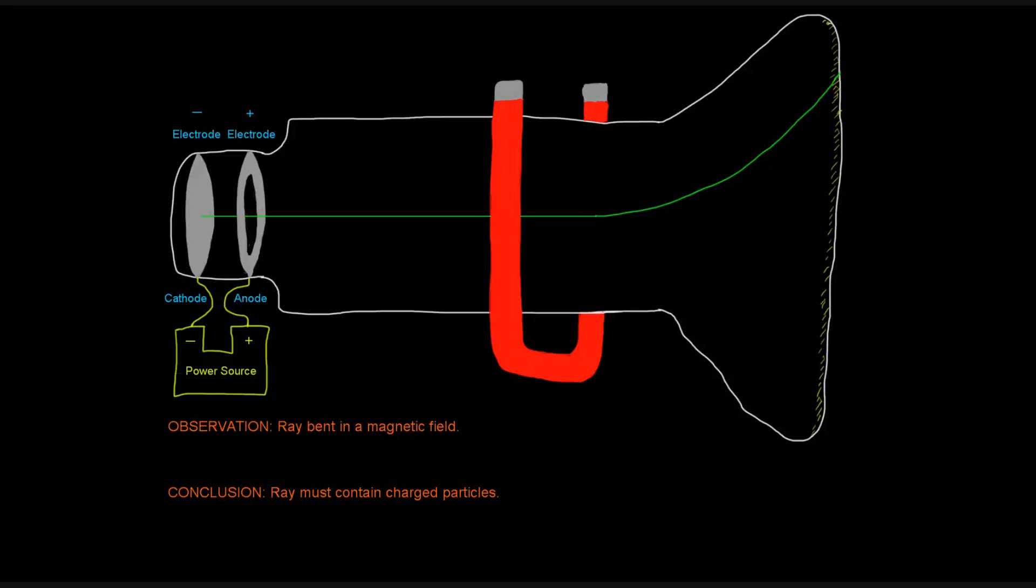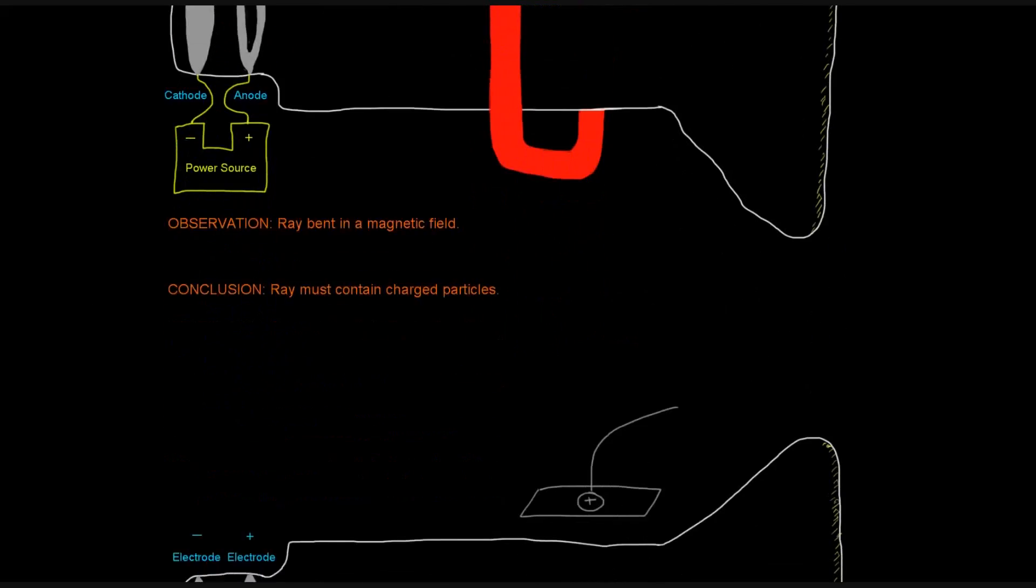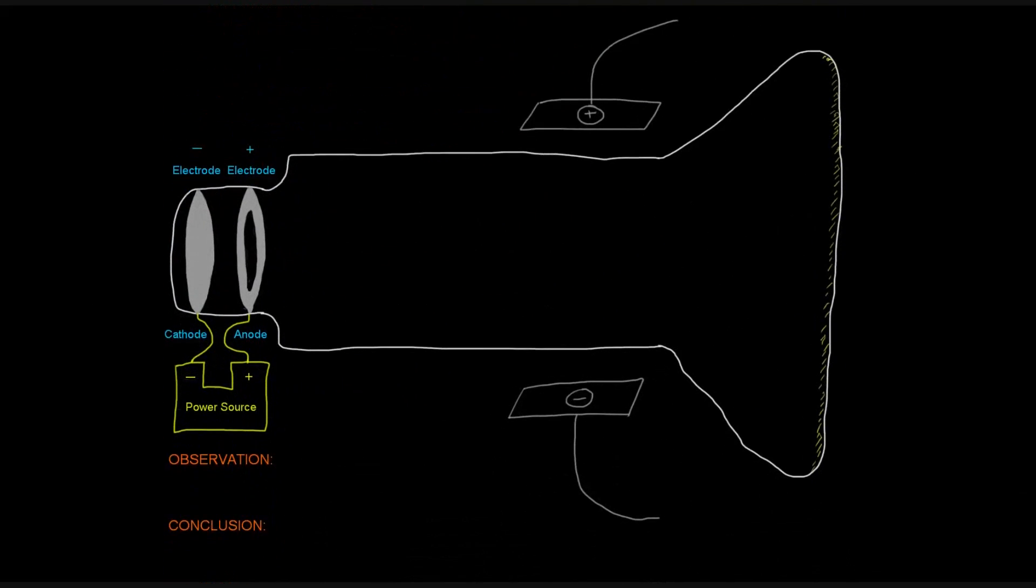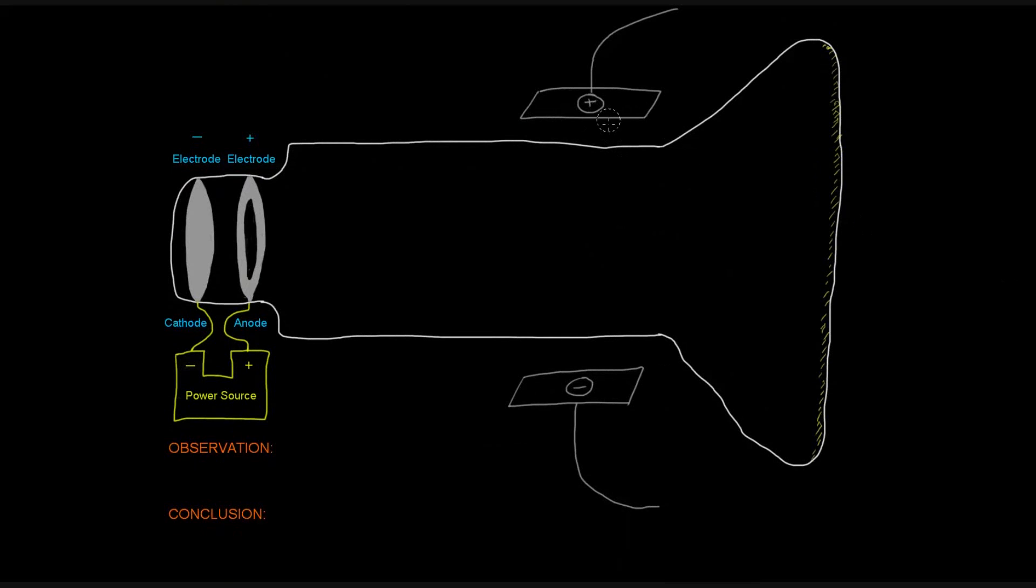So then he wonders, what charge is this? So then what he does is he takes two plates, two metal plates, one of them being positively charged and one of them being negatively charged. And he wants to see which direction the beam will bend in, so he checks it out, and he sees that the ray bends towards the positive plate.